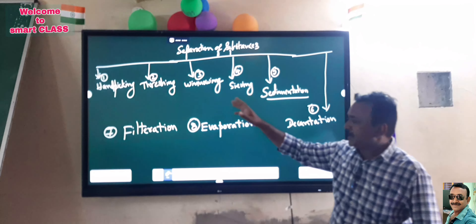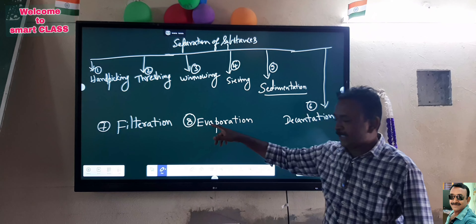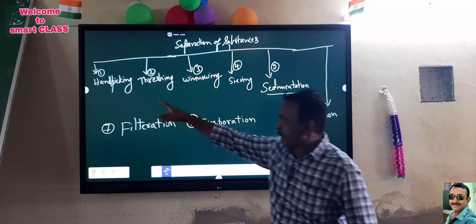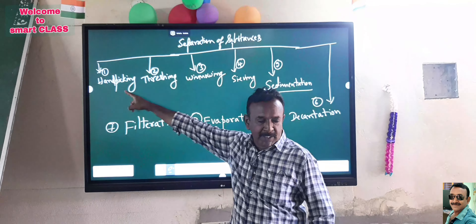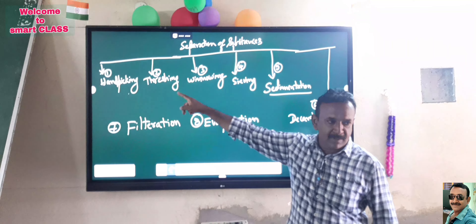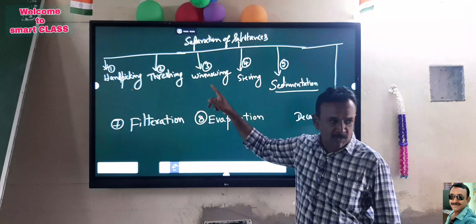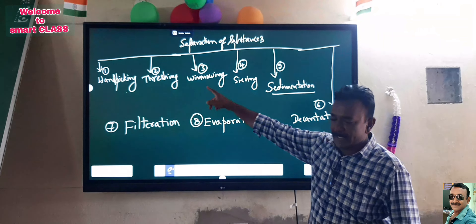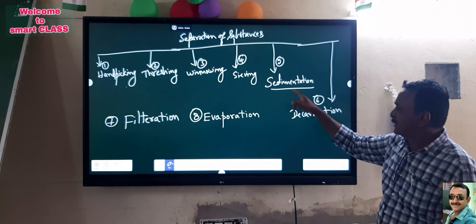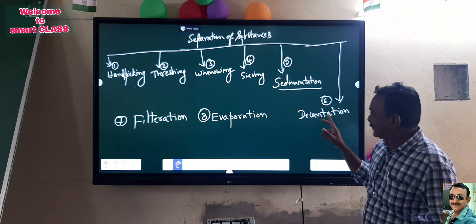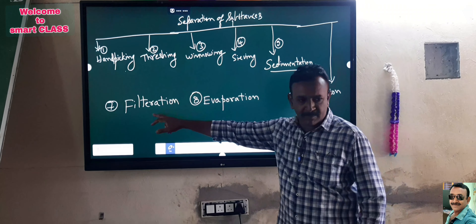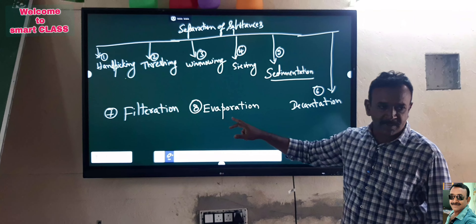There are 8 methods of separation. The first one is Handpicking. The second one, third one, fourth one — Sieving. The fifth one is Sedimentation, the sixth one is Decantation, the seventh one is Filtration, and the last one is Evaporation.